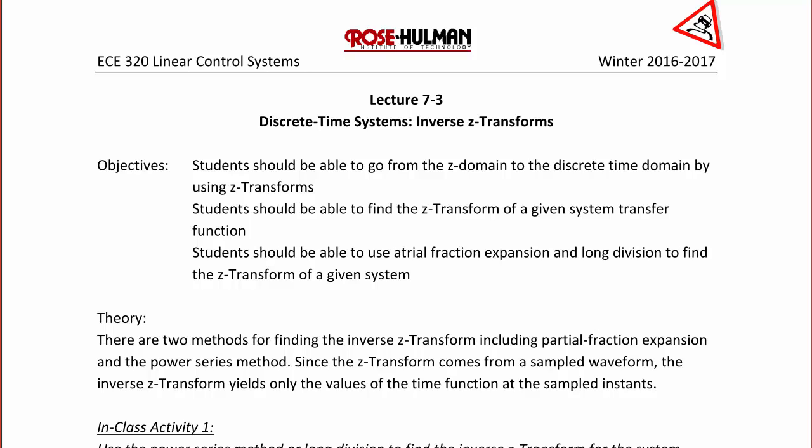There are two methods for finding the inverse Z transform: partial fraction expansion and the power series method. Since the Z transform comes from a sampled waveform, the inverse Z transform yields only the values of the time function at the sampled instances.